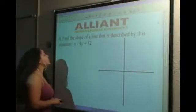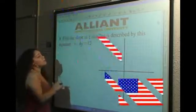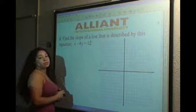How you doing there? Here we have an equation that deals with line and slope. It says, find the slope of a line that is described by this equation: x minus 4y equals 12.